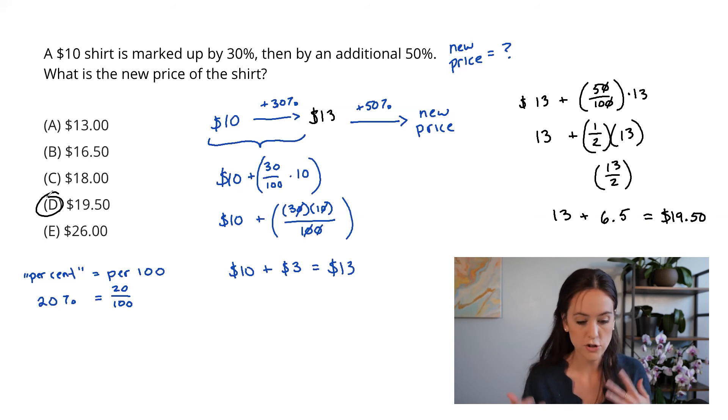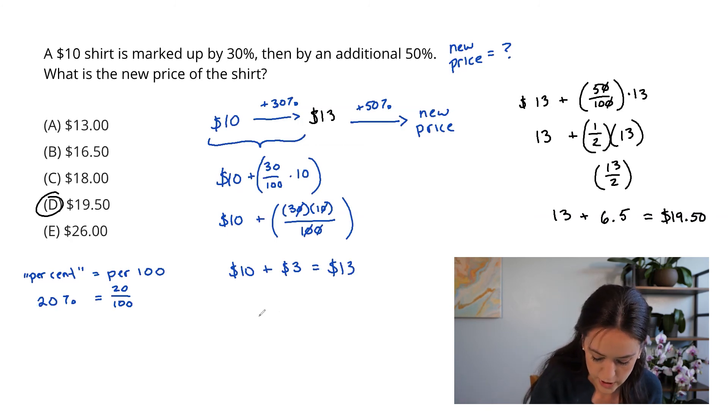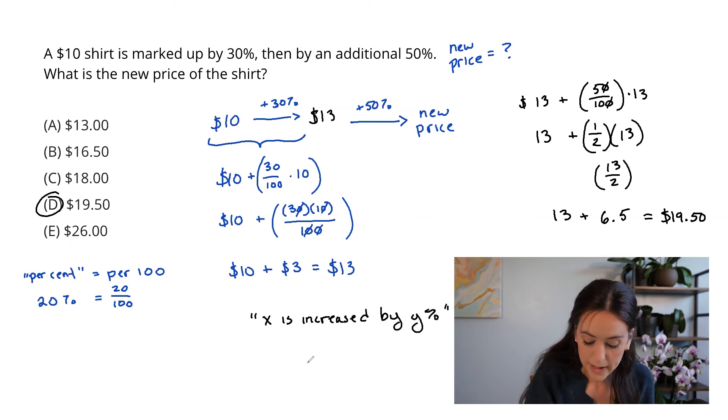So just to show the generalizable form here, you're going to see this a lot on the test. To show you how to write it in general, if we ever have X is increased by Y percent, the way to write that is exactly what we've been doing here, which is X plus Y over 100 times X.